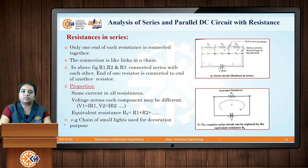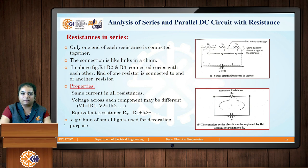First we will discuss about the series connection of resistances. Consider this diagram here — I can see the number of resistances R1, R2 and R3. These are connected in series and they are connected across a common voltage source V. The voltage drop across each resistor will be different, but the current flowing through R1, R2 and R3 is common, I.